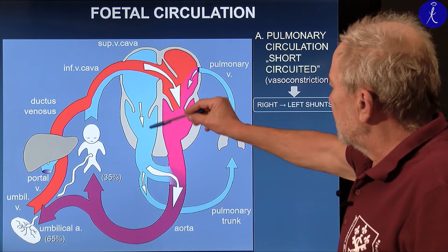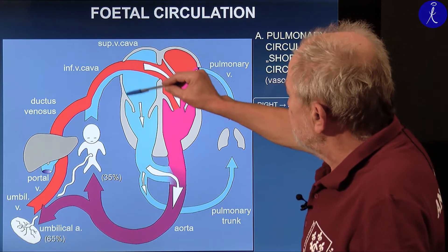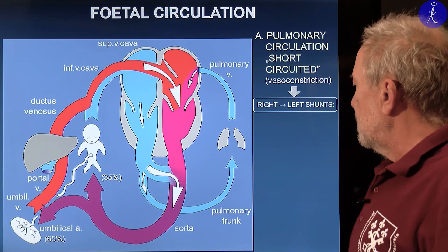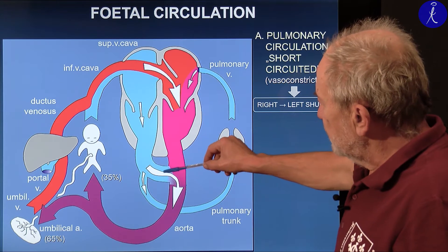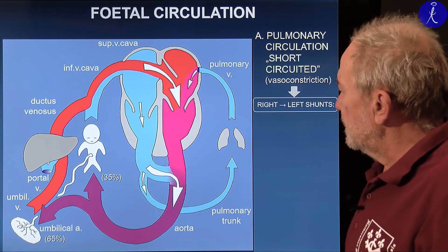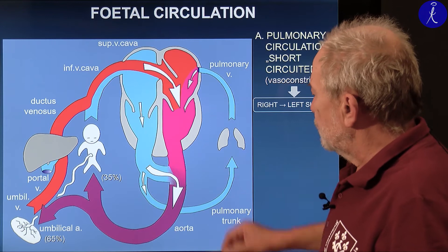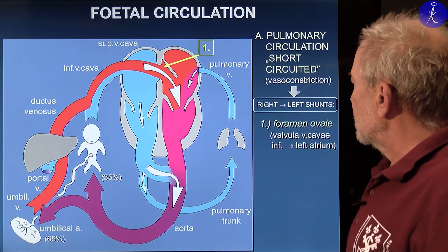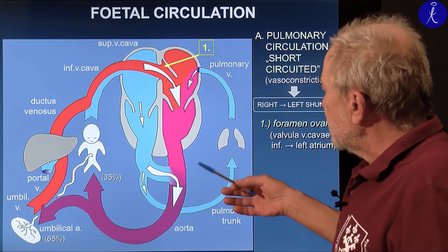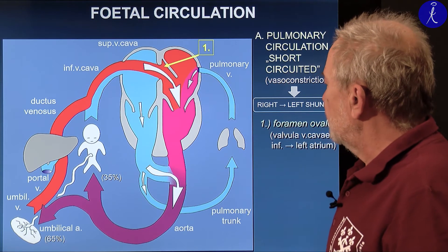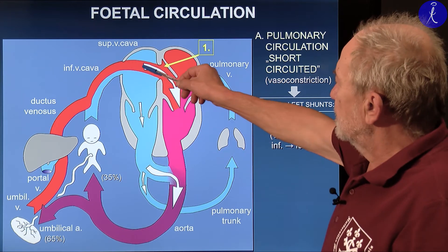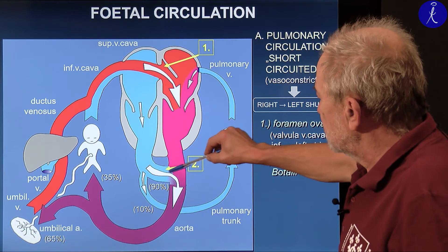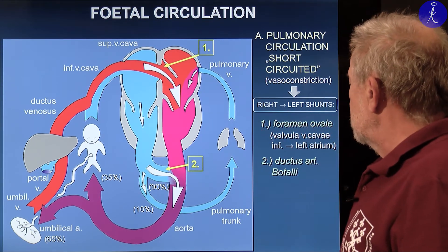The right half of the heart receives mixed blood, and the right ventricle pumps it towards the lung, but because the lung has extremely high vascular resistance, most of the blood through the ductus arteriosus joins the aorta. Very importantly, because there is almost no pulmonary circulation, these communications between the right and left halves must not be closed during embryonic life. One communication is through the foramen ovale, and the other is the ductus arteriosus of Botallo. These are responsible for right-to-left shunts of the blood.